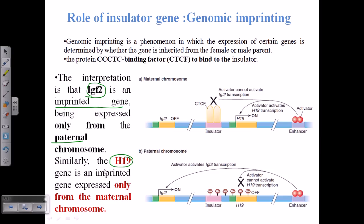As an example, IGF2 is an imprinted gene that can be expressed only from the paternal chromosome. On the other hand, H19 can only be expressed from the maternal chromosome. If you look at this picture, it will be clear: the maternal one which is H19 — and here we can see that IGF2 needs to be expressed from the paternal chromosome. Remember, all of our cells will have the same number of chromosomes and the same type of genes.